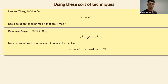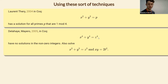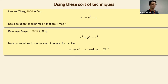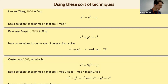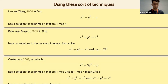One year later, people did the n equals four case of Fermat's Last Theorem — x to the fourth plus y to the fourth equals z to the fourth has no nonzero solutions — also in Coq. They also solved some other classical problems. A more advanced version of Fermat's Christmas Theorem with a three in front of y squared, and the n equals three case of Fermat's Last Theorem, were done in Isabelle.